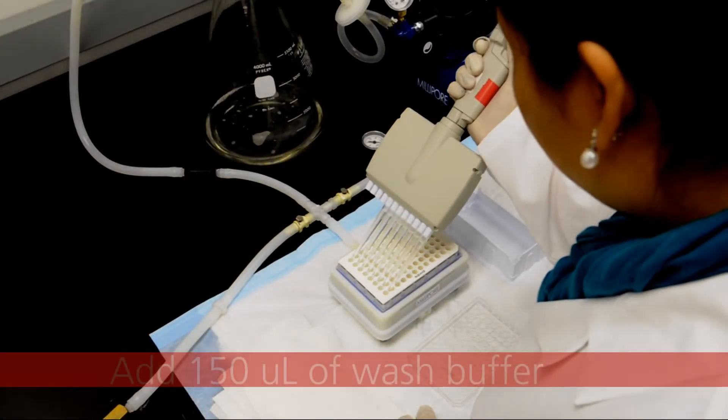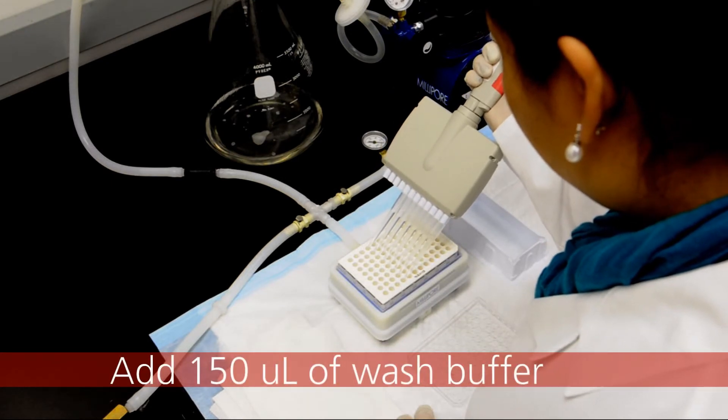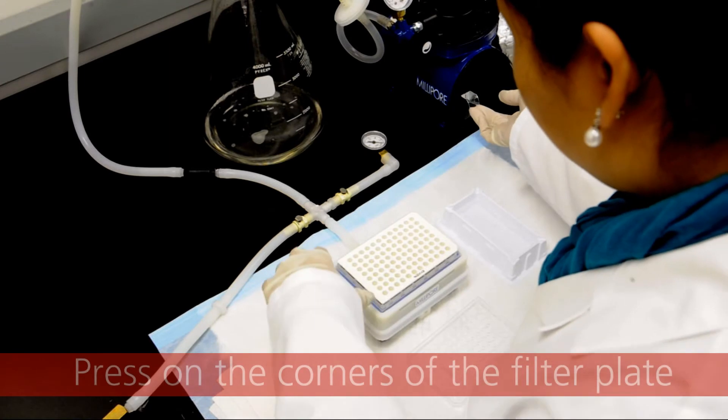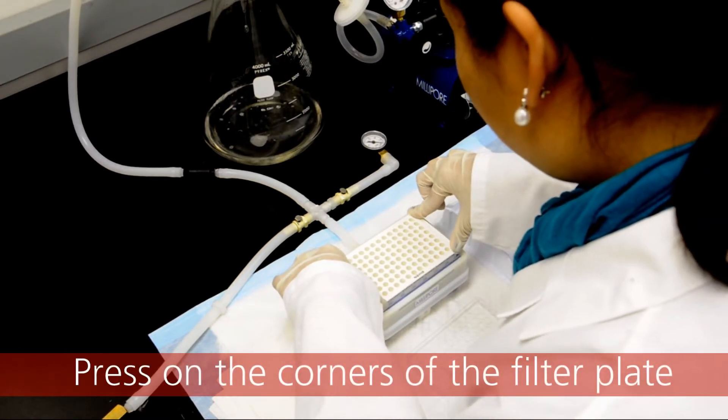To wash the plate, pipet 150 microliters of wash buffer into each well. Turn on the vacuum manifold and evenly apply pressure to the outer four corners of the plate.